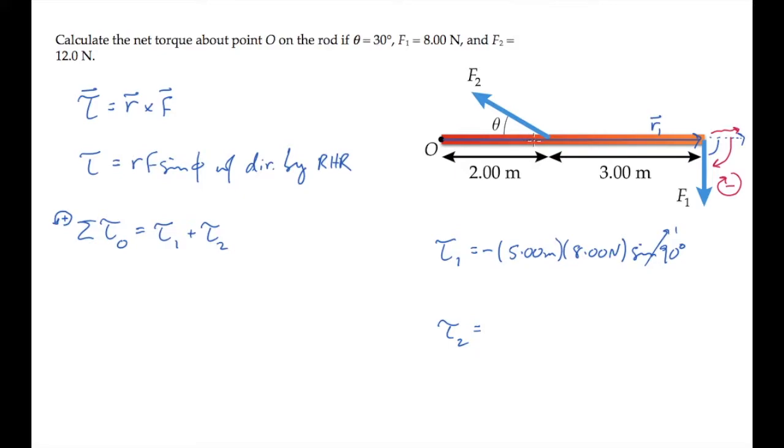For the torque due to force two, we have the R2 vector shown here, and moving it tail to tail with the force, we see this is the angle phi, so the torque has a magnitude R2 times F2 sine of the angle phi, which is 150 degrees, and the direction is given by the right-hand rule.